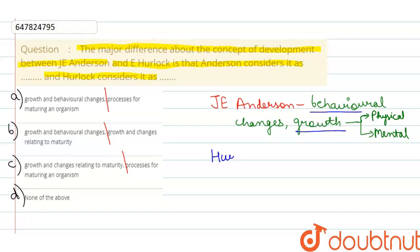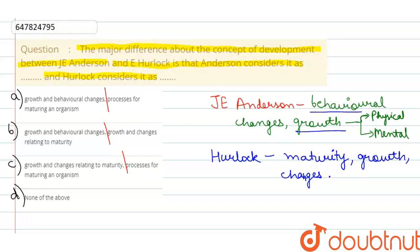Hurlock ne maturity ke baare mein baat ki hai. Unhone growth ke baare mein baat ki, aur changes ke baare mein baat ki. So the first part is Anderson and the second part is Hurlock. According to these options, our answer is Option B — that is Growth and Behavioral Changes for Anderson, and Growth and Changes Related to Maturity for Hurlock.